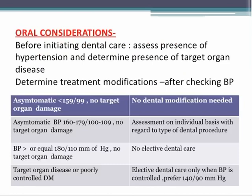Regarding oral considerations for hypertension: before initiating dental care, assess the presence of hypertension and any target organ disease. If the patient is asymptomatic with BP less than 159 systolic and less than 99 diastolic with no target organ damage, no dental modification is needed. If BP is 160 to 179 systolic and 100 to 109 diastolic with no target organ damage, assessment on an individual basis regarding the type of dental procedure should be done. If BP is greater than or equal to 180/110 mmHg with no target organ damage, no elective dental care is indicated. If target organ disease or poorly controlled diabetes mellitus is present, elective dental care should only be provided when BP is controlled, preferably at 140/90 mmHg.